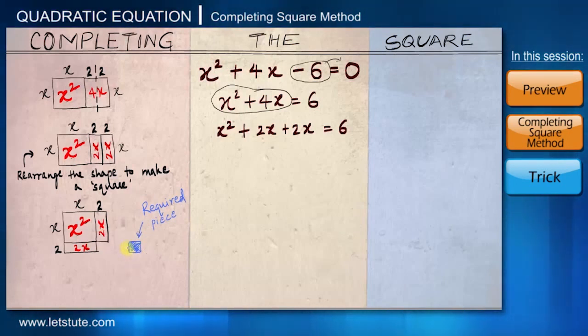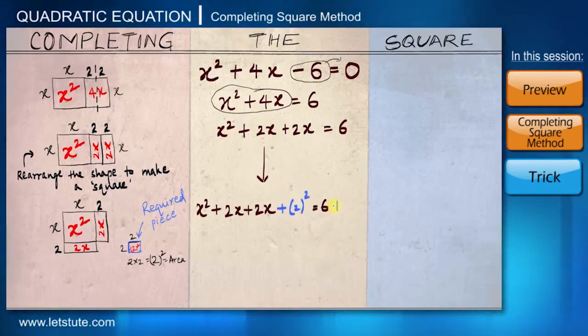So in such a case, the smaller square will have length 2 and breadth 2. And the area of that square will be 2². Because length into breadth will give us 2 into 2 which is equal to 2². So since I am adding a small square with area 2² on my left-hand side, in order to balance the equation, I will even add it on my right-hand side.